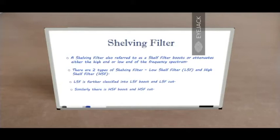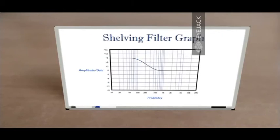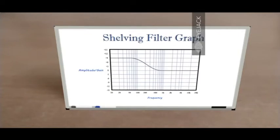Each of these categories are further classified into two different types, which is the boost or cut. There is the LSF low shelf filter boost version and the LSF cut version, and similarly for high shelf filter, there is a HSF boost version and HSF cut version. Here is a typical shelf filter graph — this is a low shelf filter which is being boosted. The reason why it's called boost is because the lower end of the spectrum has been boosted from 0 to 9, as is evident in the graph, whereas the higher end of the spectrum has been left untouched.